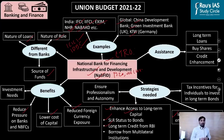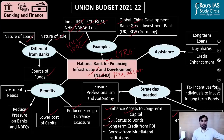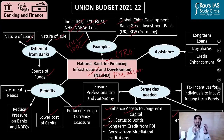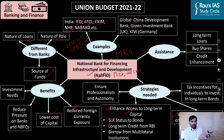Lastly, retail investors like you and me should be allowed to invest in bonds issued by the development bank, and such investments should be provided tax incentives. This will mobilize people's savings, which will in turn be used for financing infrastructure projects.